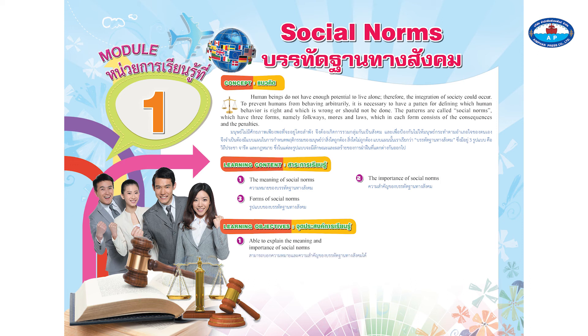Learning objectives: one, able to explain the meaning and importance of social norms; two, able to specify the forms of social norms; three, able to communicate in English.